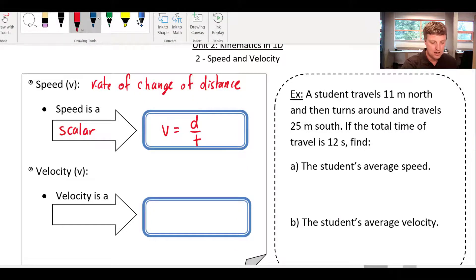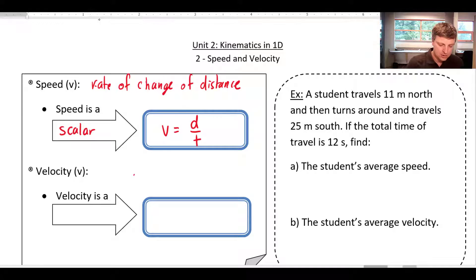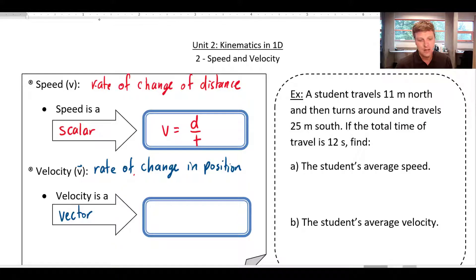And so the formula is v equals d over t. Now velocity, slightly different, is going to be the rate of change in position. And so velocity is a vector. We would write that velocity is also lowercase v, but we would probably just put a little arrow over top if we need to differentiate.